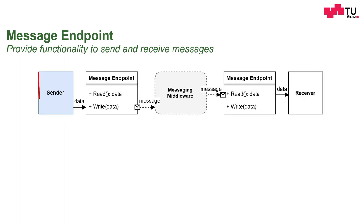The next messaging pattern is the message endpoint. The basic idea is to provide functionality to send and receive messages. A sender wants to send some data, and a dedicated message endpoint component provides the functionality of writing or sending data and receiving or reading data. This data is packed into a message and sent over some messaging middleware over the network. The sender doesn't know which route the message will take, but eventually it will be received by another message endpoint.